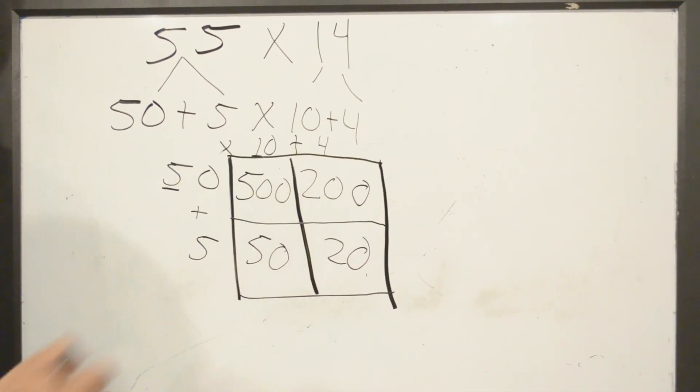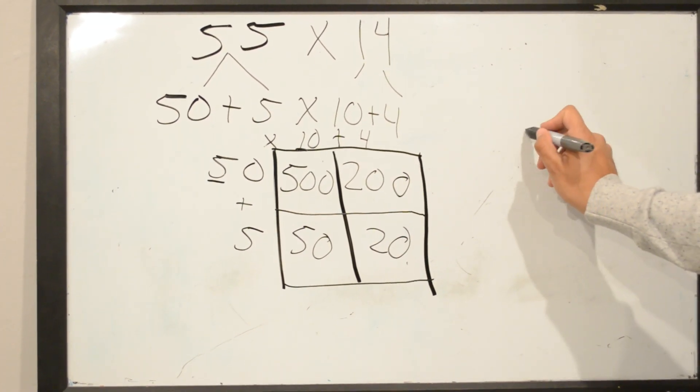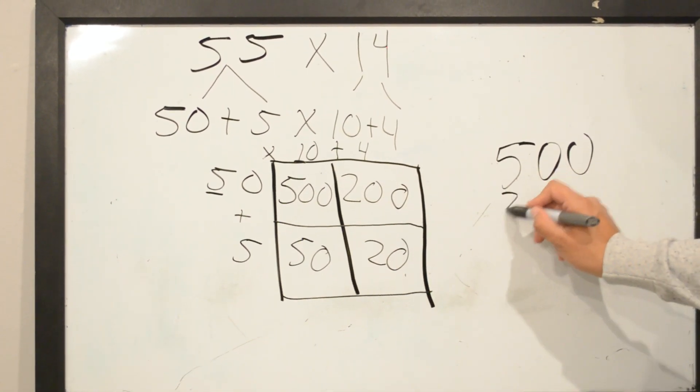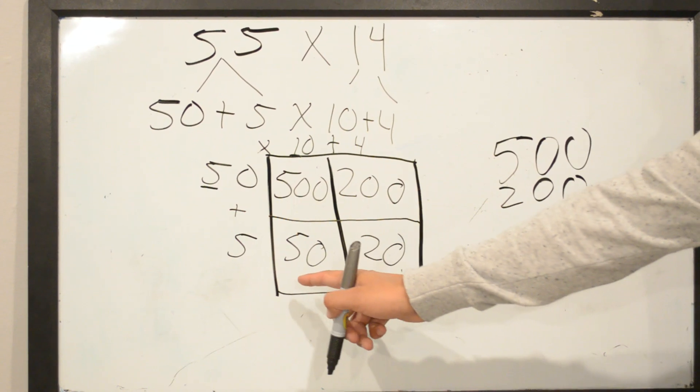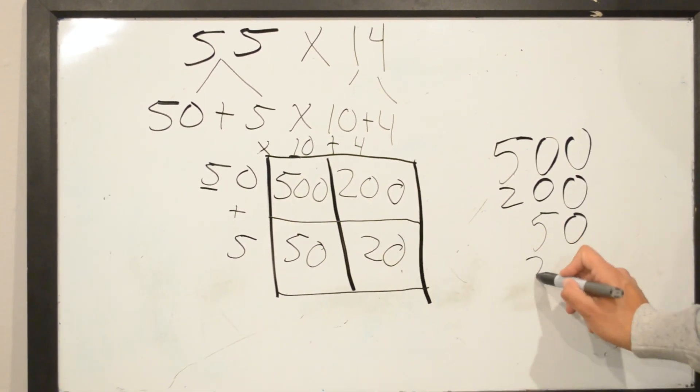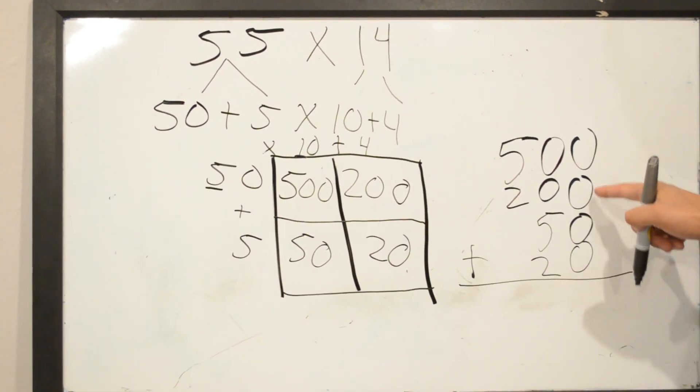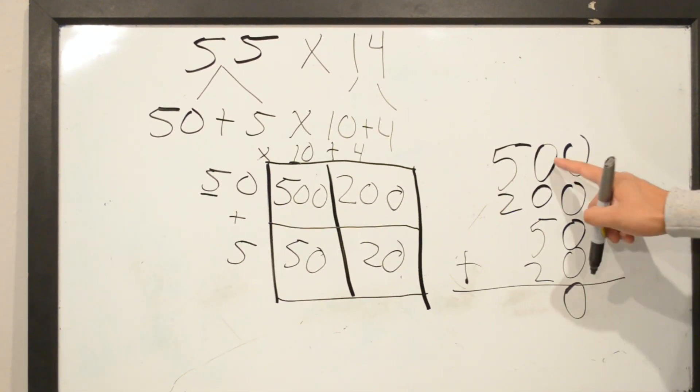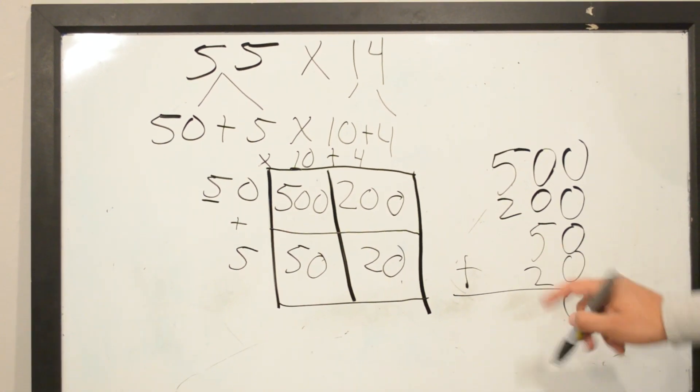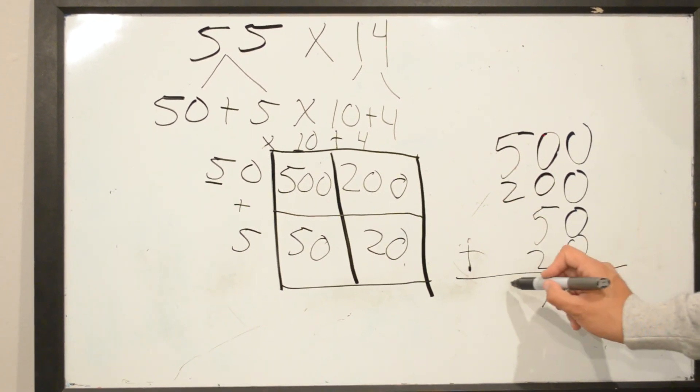The first biggest number is 500, second biggest number is 200, third biggest number is 50, and your last number is 20. We add all the numbers. 0 plus 0 is 0, 0 plus 5 is 5, and 5 plus 2 is 7.